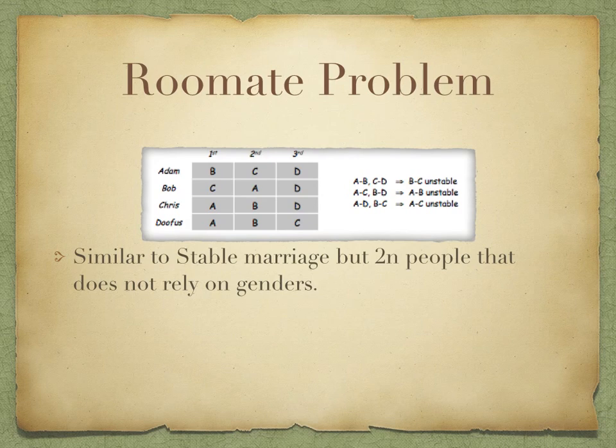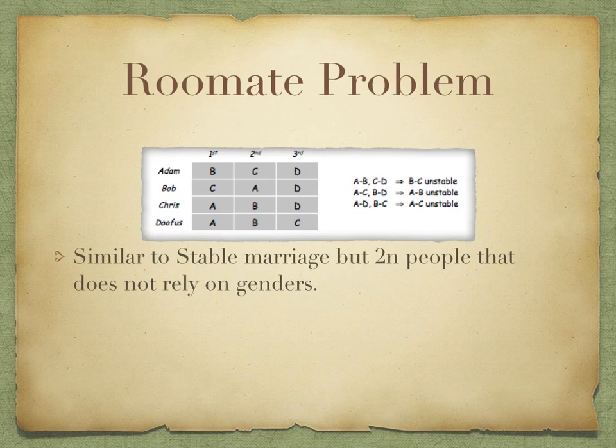We have 2N people to pair up. In this case, because of no gender discrepancy, each person can be paired with any of the other 2N minus one people. In our case, we have Adam, Bob, Chris, and Doofus. As you can see, nobody likes Doofus. Therefore, whenever Doofus is paired up with someone, that person will likely try to get out of their current pairing and go rogue with someone else. Therefore, this entire scenario is unstable.